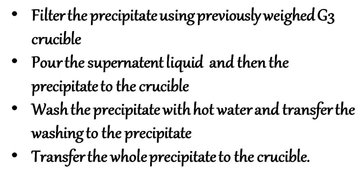Filter the precipitate using a previously weighed G3 sintered crucible. Pour the supernatant liquid first. Then wash the precipitate in the beaker with hot water and transfer the washings to the crucible. Then transfer the whole precipitate to the crucible.